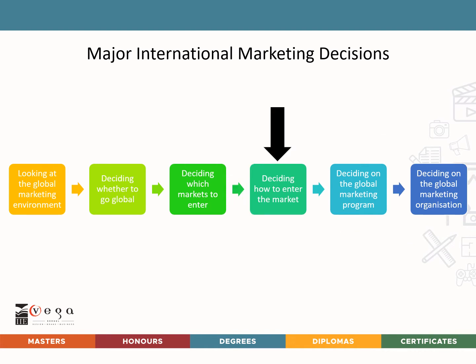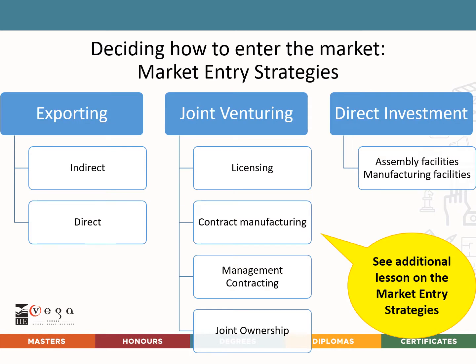Let's start by looking at how to decide how to enter the market. Market entry strategies can be divided into three areas: exporting, joint venturing, and direct investment. Exporting includes indirect and direct exporting. Joint venturing includes licensing, contract manufacturing, management contracting, or joint ownership. Direct investment is when the company builds their own facilities in the foreign country.